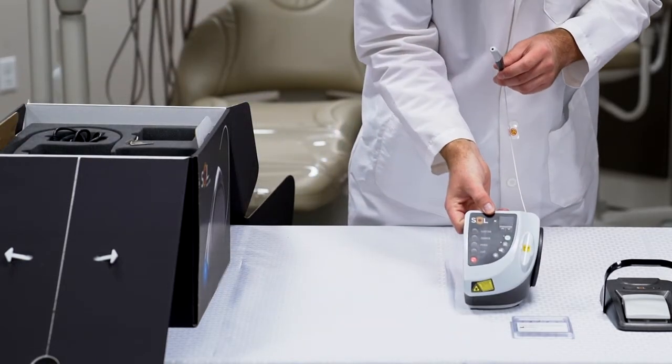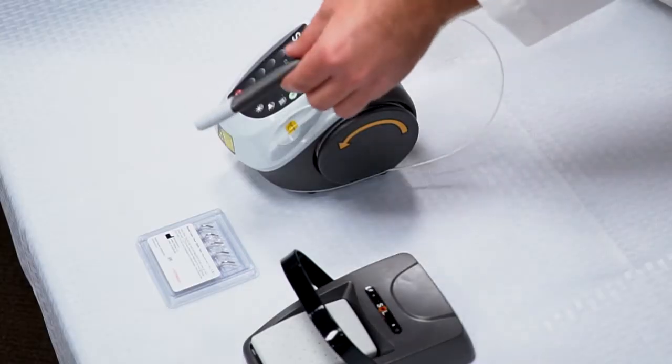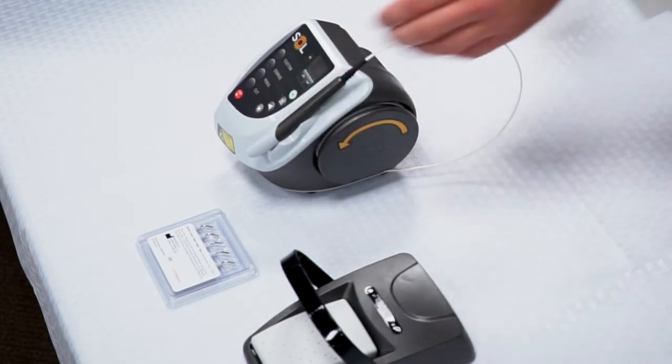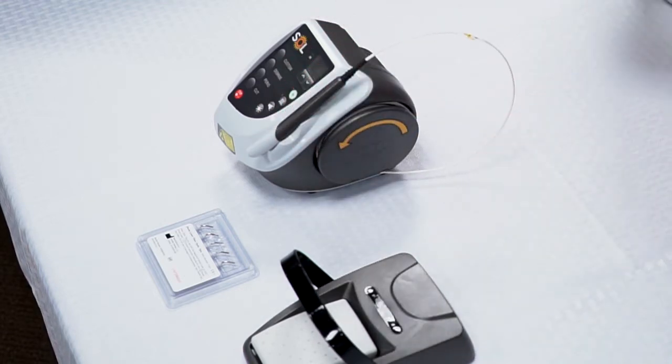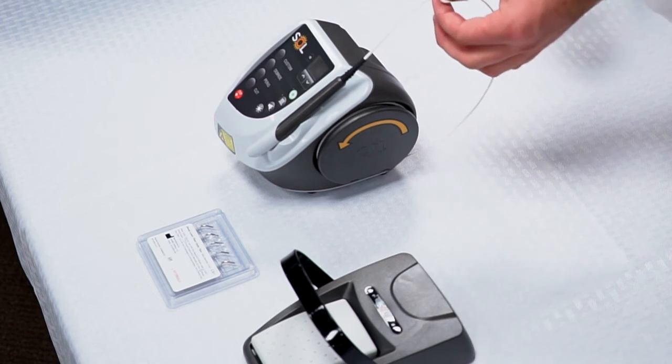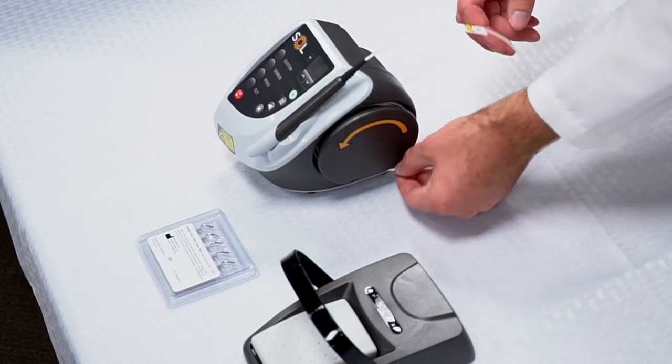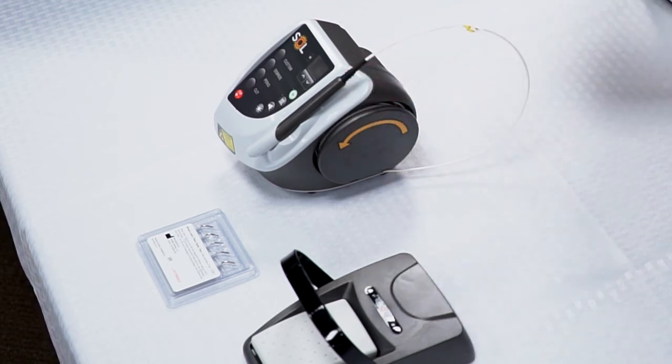And then here you have your laser unit and the handpiece. The handpiece is magnetic, so please make sure you always store it this way. This fiber optic cable is made of glass and can break, so be very careful with this component.